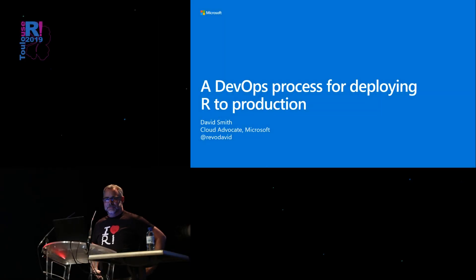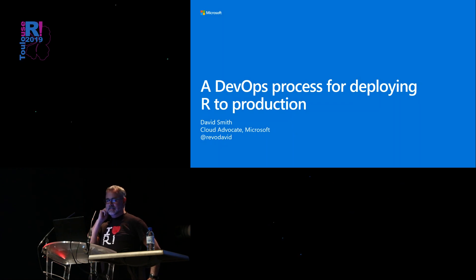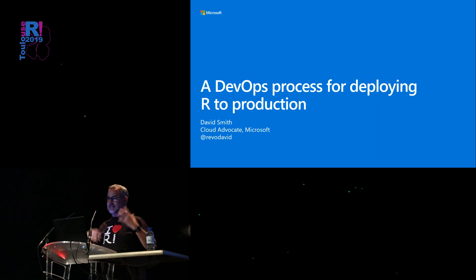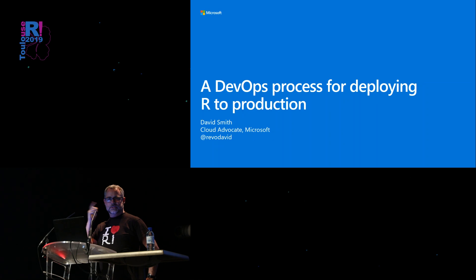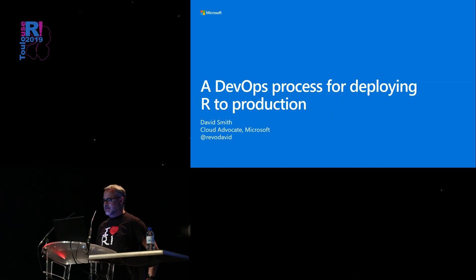It's been a great coincidence — all these talks have really been building on each other. As Kevin said, I'm David Smith from Microsoft. Today I want to talk to you about a process for deploying R to production that fits within the DevOps lifecycle. I am going to be using some services in Azure, like you've seen in some of the previous talks, but everything I'm talking about applies quite generally.